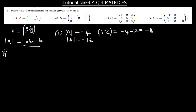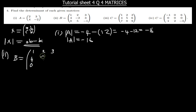So for part (ii), matrix B. B is equal to a 3x3 matrix with elements: 1, 2, 3 in the first row; 4, 0, negative 2 in the second row; and 5, 3, negative 1 in the third row. So to find the determinant of B, you reserve one line — I've decided to use the first row, which is 1, 2, and 3.